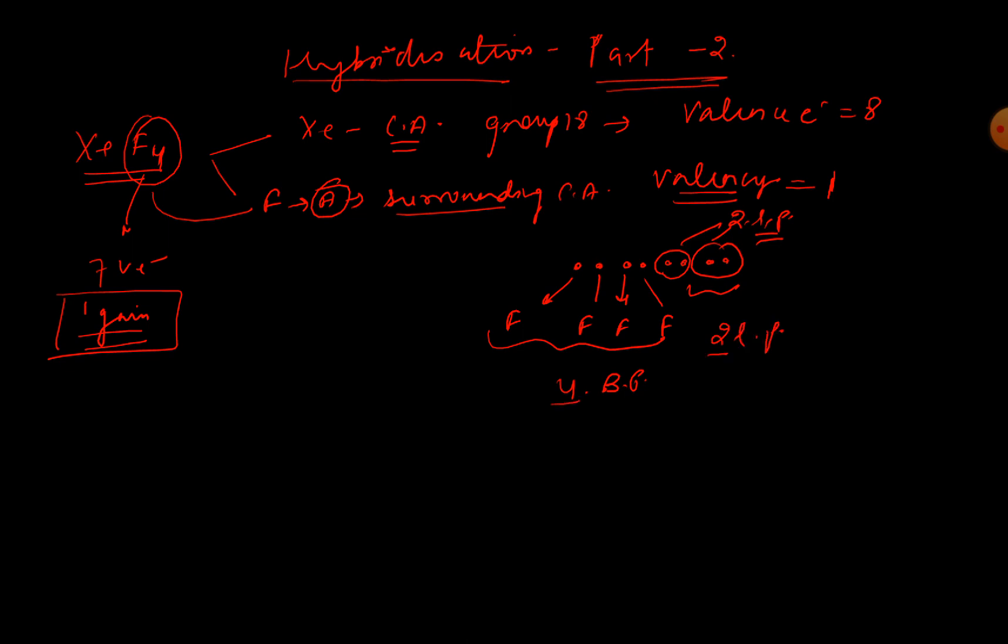Two plus four is equal to six. For total number of six, the hybridization becomes sp3d2. But since we are getting two lone pairs, is it regular sp3d2 or distorted? I think it will be distorted.